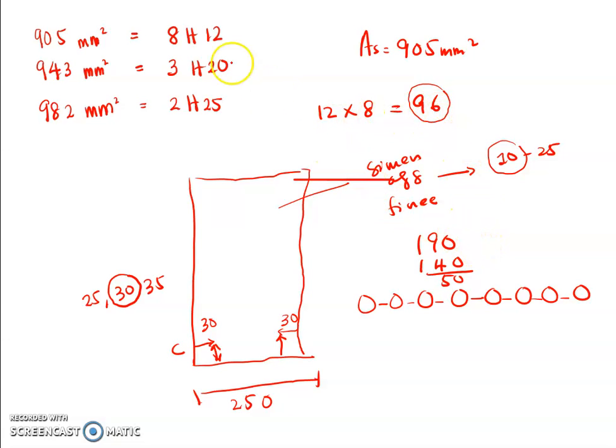For this option, we cancel. Not enough space to rearrange this one. Then we try to choose 943, three H20.